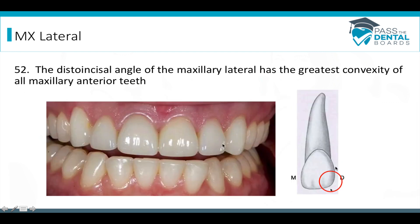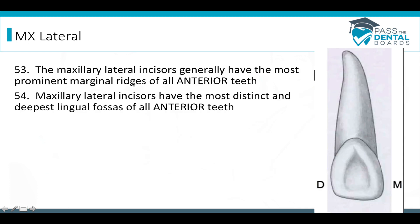The disto-incisal line angle of the maxillary laterals has the greatest convexity of all maxillary anterior teeth. Looking at the lingual side, the maxillary lateral incisor generally has the most prominent marginal ridges of all anterior teeth and the most distinct lingual fossa of any anterior tooth — due in part to the distal lingual groove, which can also complicate root planing.